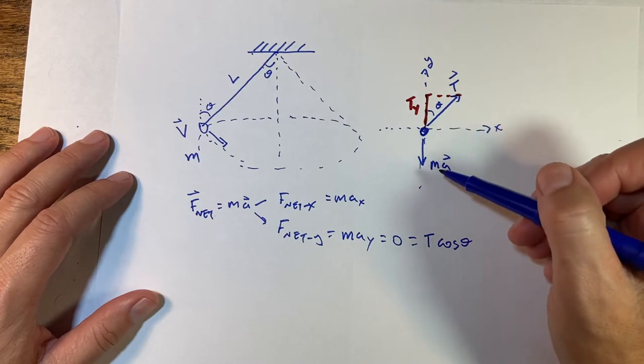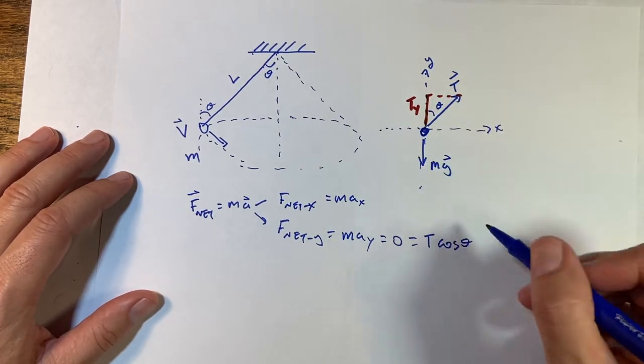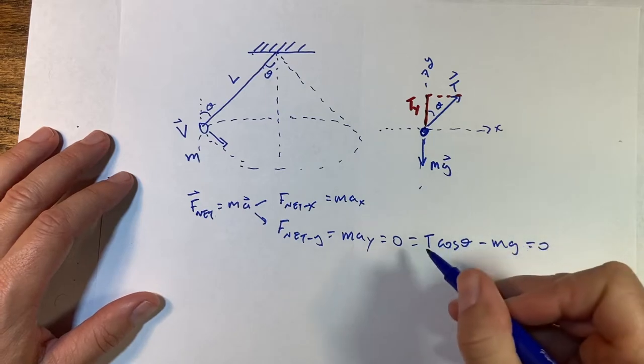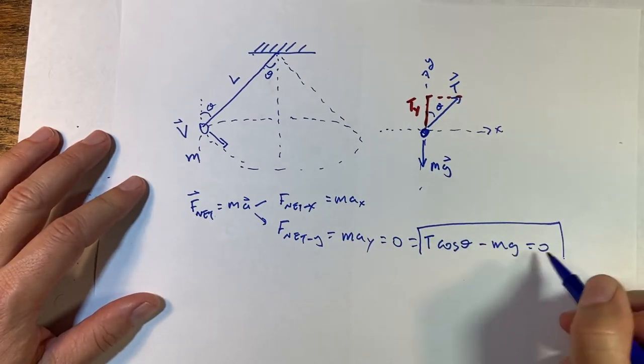Because cosine is adjacent over hypotenuse. And then I have the gravitational force in the negative y-direction. I put zero in there twice.